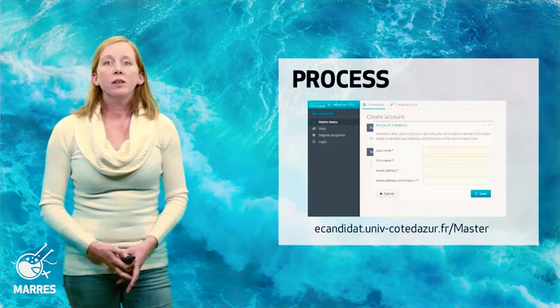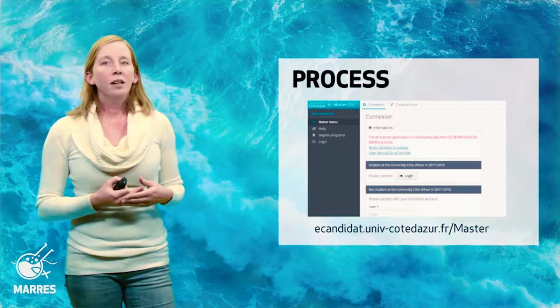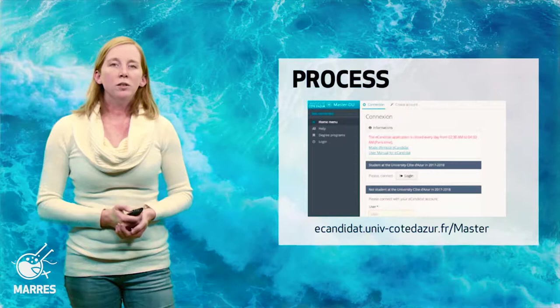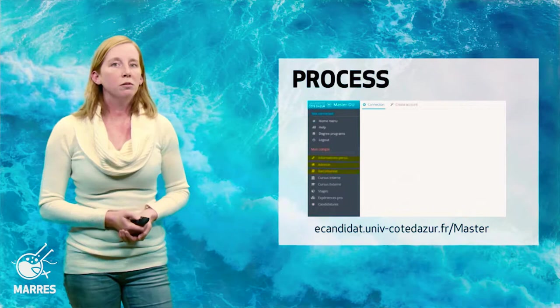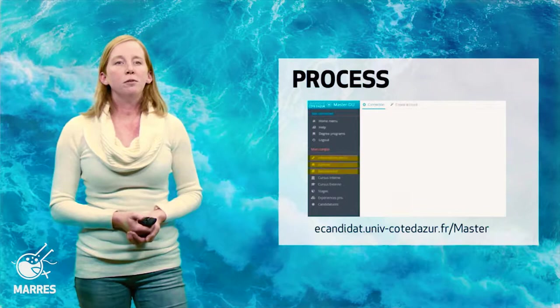You will receive an email with a link, your login and username, and you will be redirected to the platform where you can connect. Once you are logged in, there will be three more pieces of information asked of you: first your personal information, your address, and finally your baccalaureate.